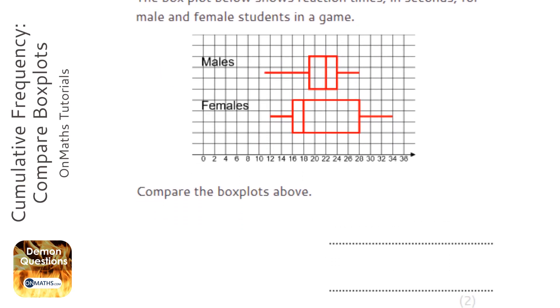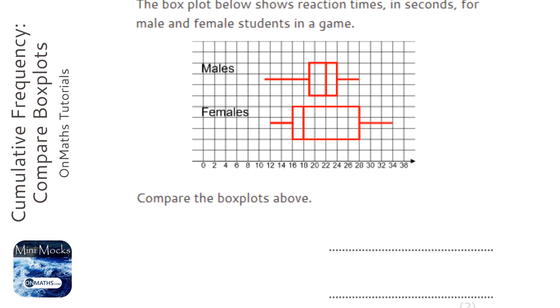Now whenever we are asked to compare box plots, or cumulative frequencies, diagrams, or cumulative frequency graphs and box plots, you're going to compare two things. The first thing we are going to compare is the medians, and the second thing is either the range or the interquartile range.